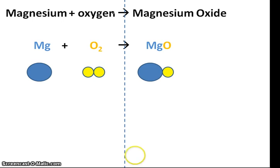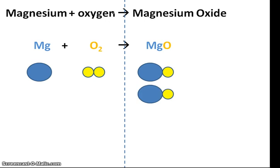As you can see, we have a problem, as here we have two oxygen atoms, whereas here we only have one. So to start with, I'm going to add a whole other magnesium oxide molecule. Now I have two oxygen atoms on this side, and two oxygen atoms on this side. My next problem is I only have one magnesium here, and I have two magnesiums here. So I'm going to add a whole other magnesium atom on this side.